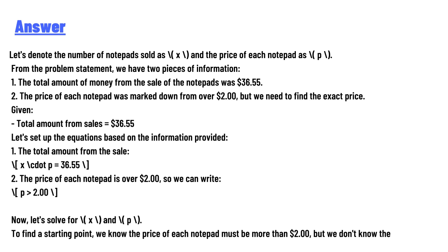First, the total amount of money from the sale of the notepads was $36.55. Second, the price of each notepad was marked down from $3 but we need to find the exact price. Given total amount from sales $36.55, let's set up the equations based on the information provided. First, the total amount from the sale: X × P = $36.55.